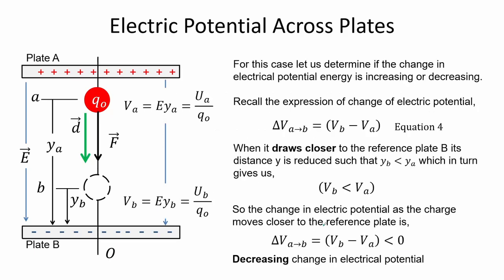For this case let us determine if the change in electrical potential energy is increasing or decreasing. Recall the expression for the change in electric potential, equation 4. When the charge draws closer to the reference plate B, its distance Y is reduced such that Y_B is less than Y, which gives us electric potential B less than electric potential A. So the change in electric potential as the charge moves closer to the reference plate is negative — it is decreasing.